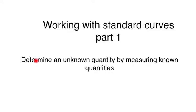With a standard curve, what we can do is determine an unknown quantity by simply measuring known quantities and then comparing the measurement of the unknown quantity with the known quantities. Sounds pretty abstract, so let's have a look at a concrete example.